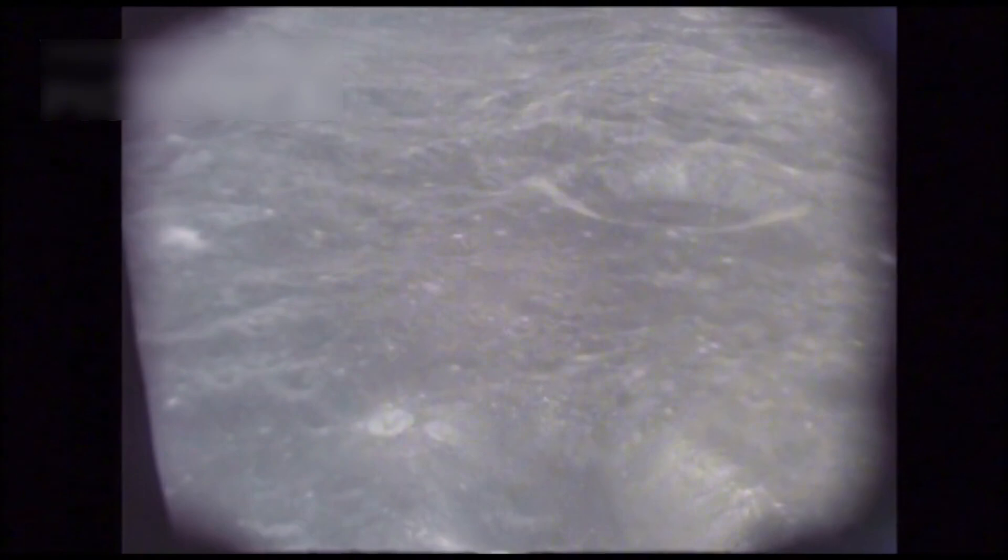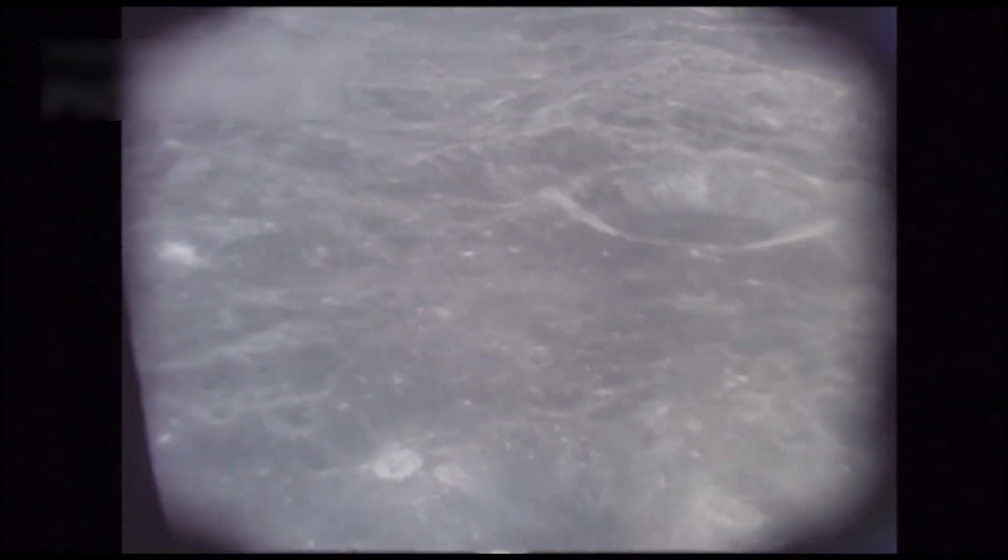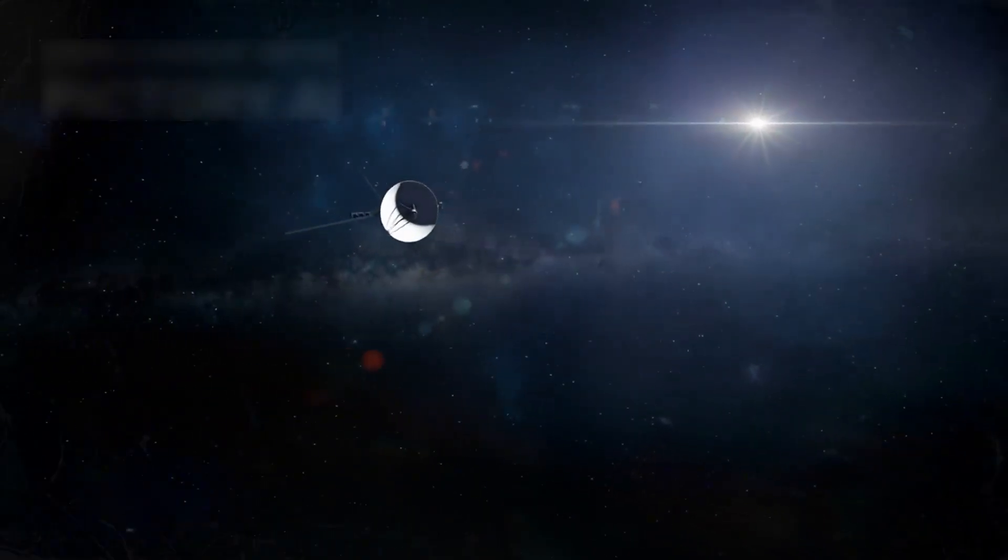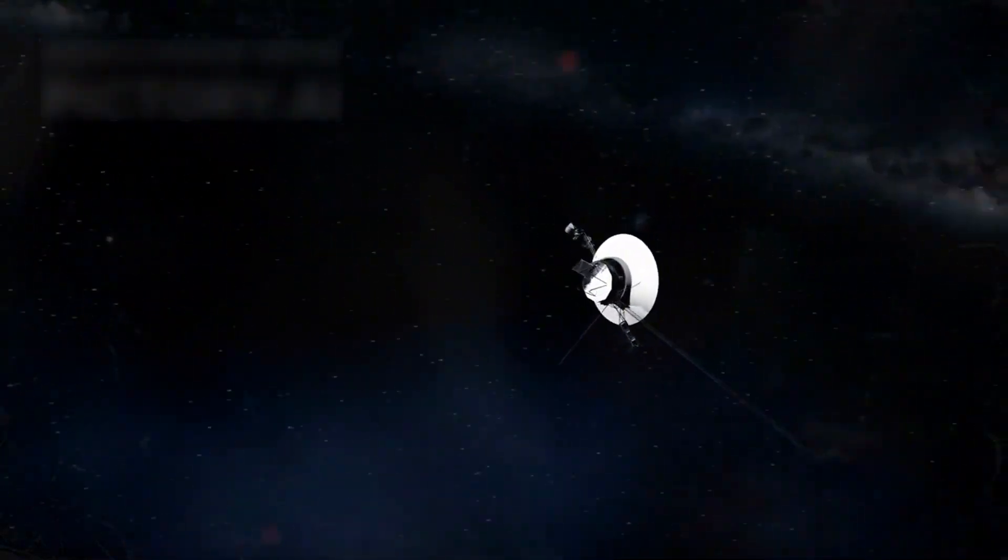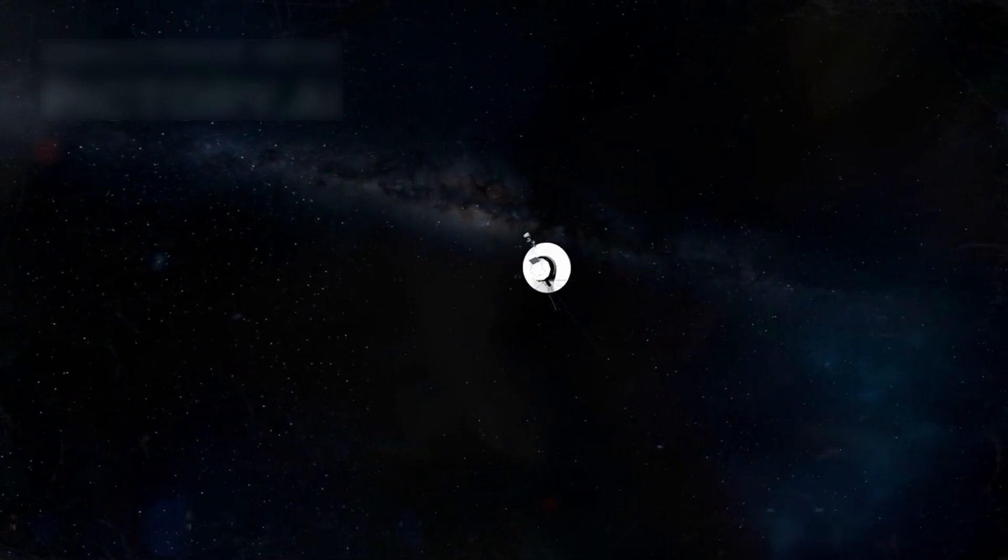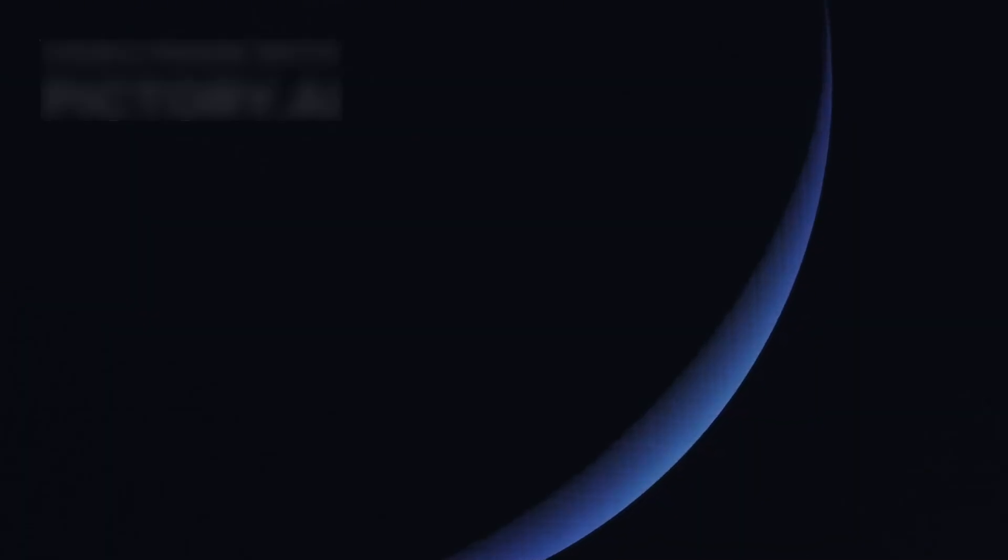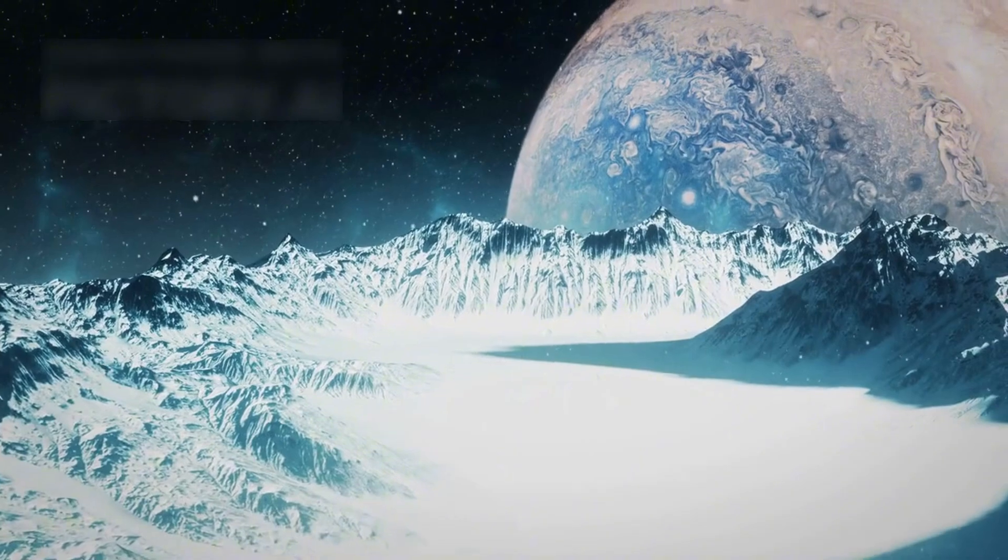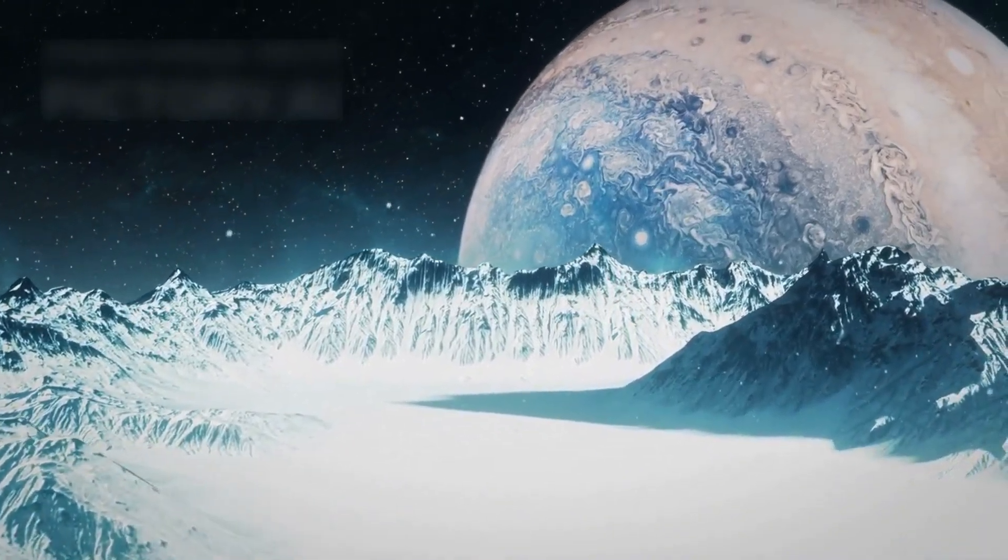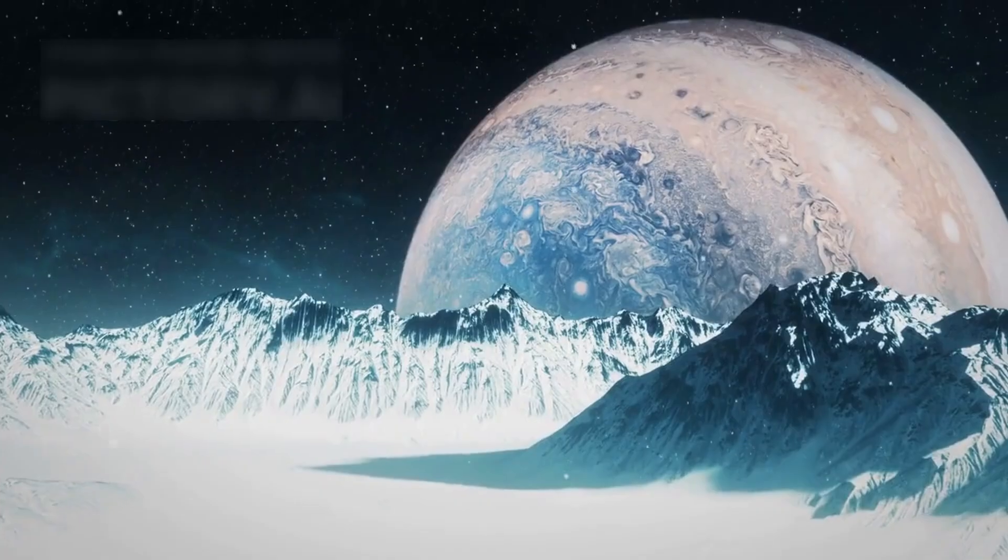Voyager 2 achieved incredible milestones, including the first close pass of Uranus in 1986 and Neptune's distant shadow. By 1989, it became the only probe to closely approach Neptune, photographing its blue swirling atmosphere. It also visited Triton, discovering windy storms and icy volcanoes erupting from that frozen crust.